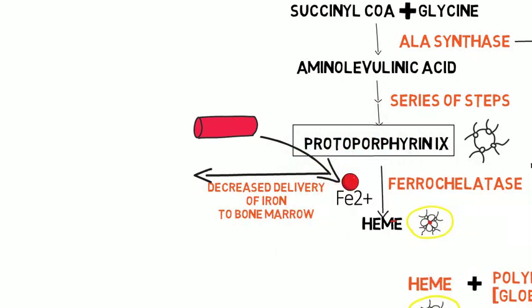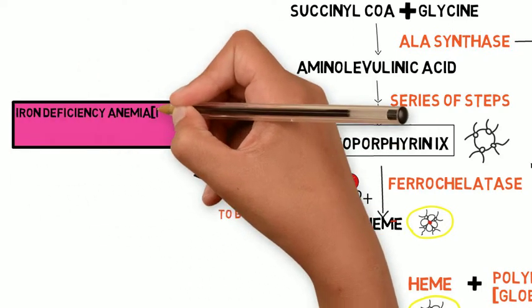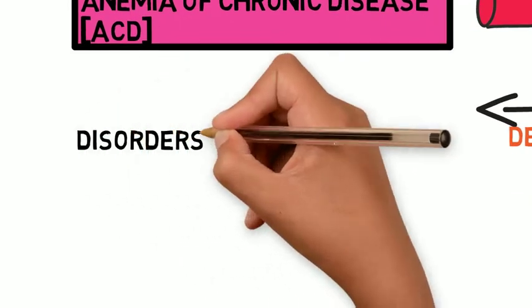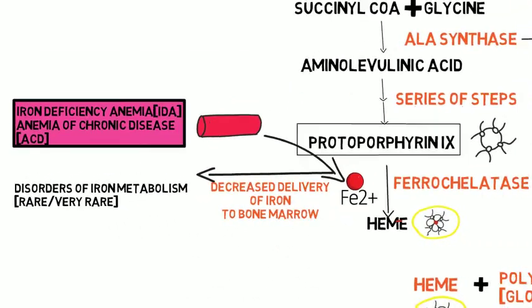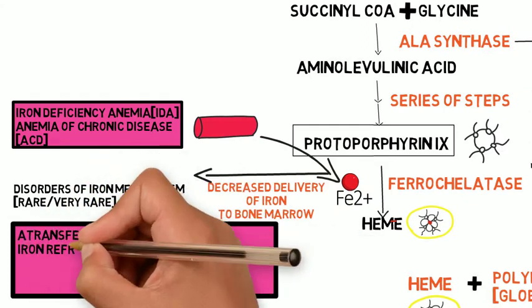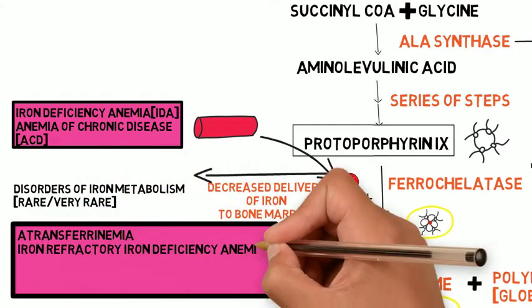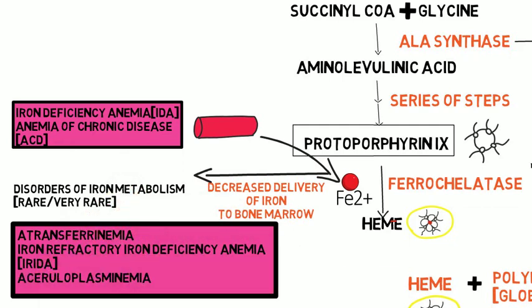Decreased iron delivery causes include iron deficiency anemia, anemia of chronic disease, and rare disorders of iron metabolism: atransferrinemia, iron refractory iron deficiency anemia (IRIDA), and aceruloplasminemia.